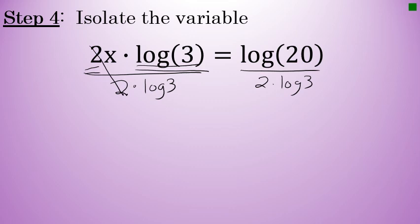On the left side of the equation, 2 divided by 2 is 1, and the log of 3 divided by the log of 3 is 1, and I am left with x equals the log of 20 over 2 times the log of 3.